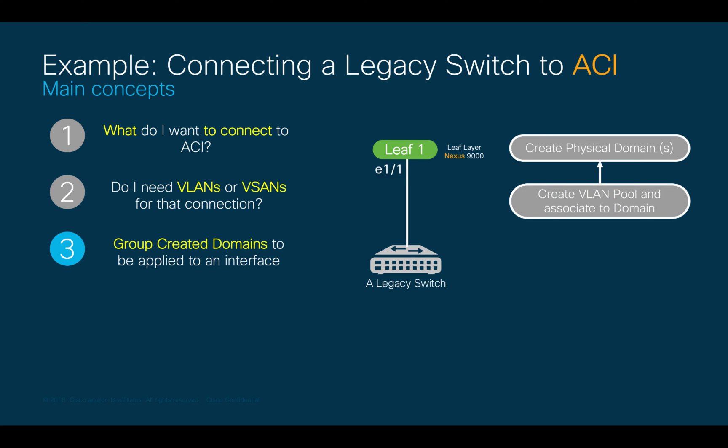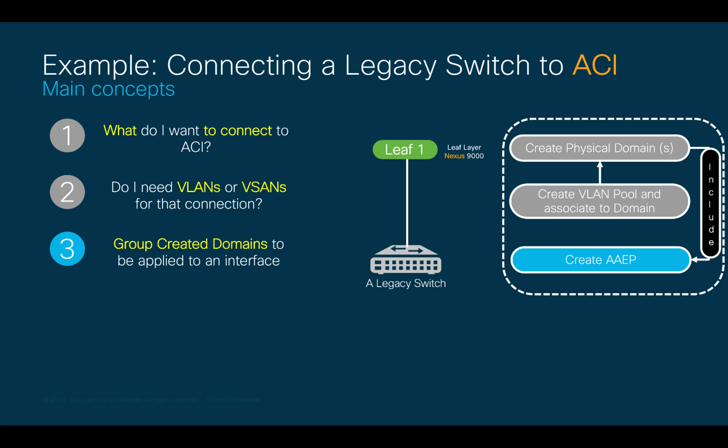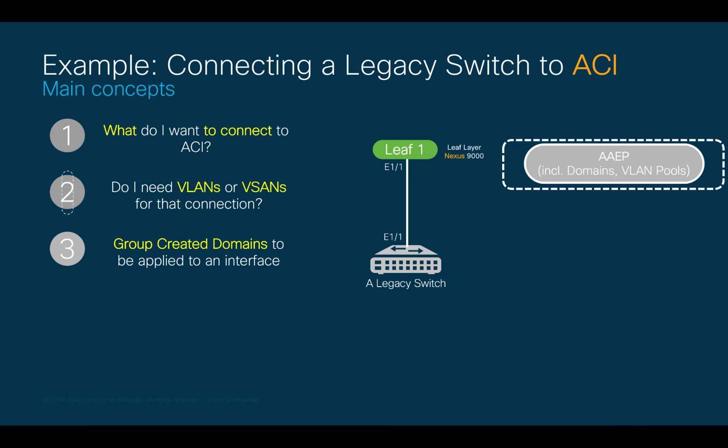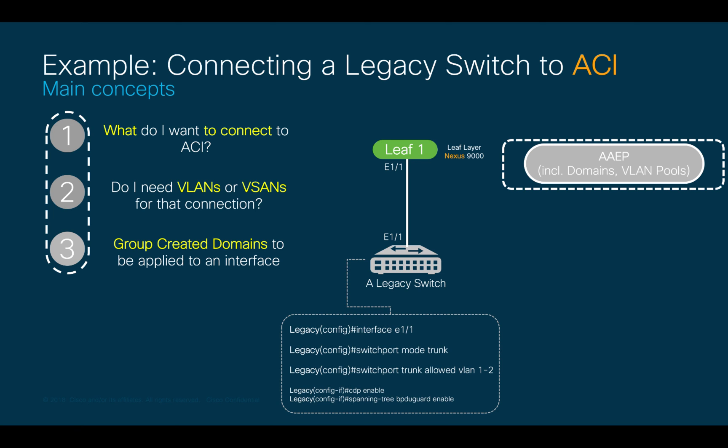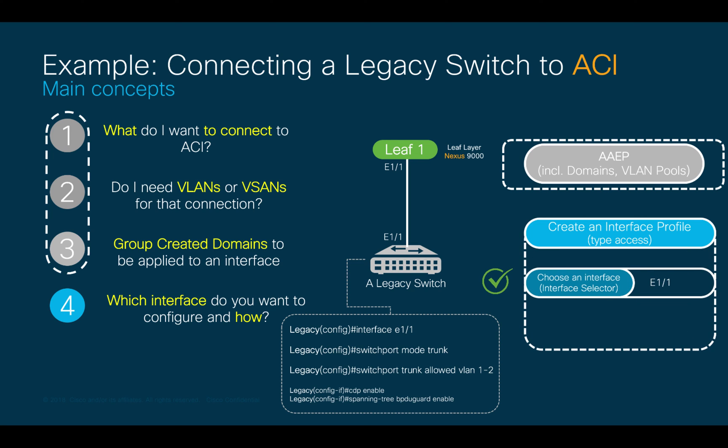Think of this as your switchport trunk allowed VLAN command. In step 3, we will create an AAEP, which will later be used within a policy group, and we will add the bare metal domain we created on step 1 to it. The AAEP now includes the physical domain and associated VLAN pool configuration. So, assuming we already configured the legacy switch as shown on your screen, we can now move to step 4, where we will select port 1.1 with an interface selector, and we will configure a trunk port by creating an interface profile.